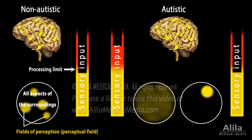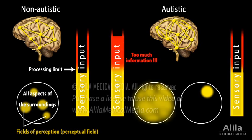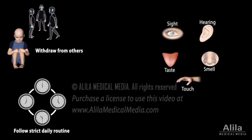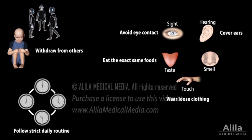They may take in more information than their brain can handle and become overwhelmed. This causes stress and may affect the ability of the brain to process the information properly, resulting in a delayed response or no response at all. In trying to reduce sensory input, people with autism typically withdraw from others and follow a strict daily routine. Depending on the affected sensory modalities, some people avoid eye contact, others cover their ears to reduce noise level, wear loose clothing to reduce touch, or eat the exact same foods day after day.